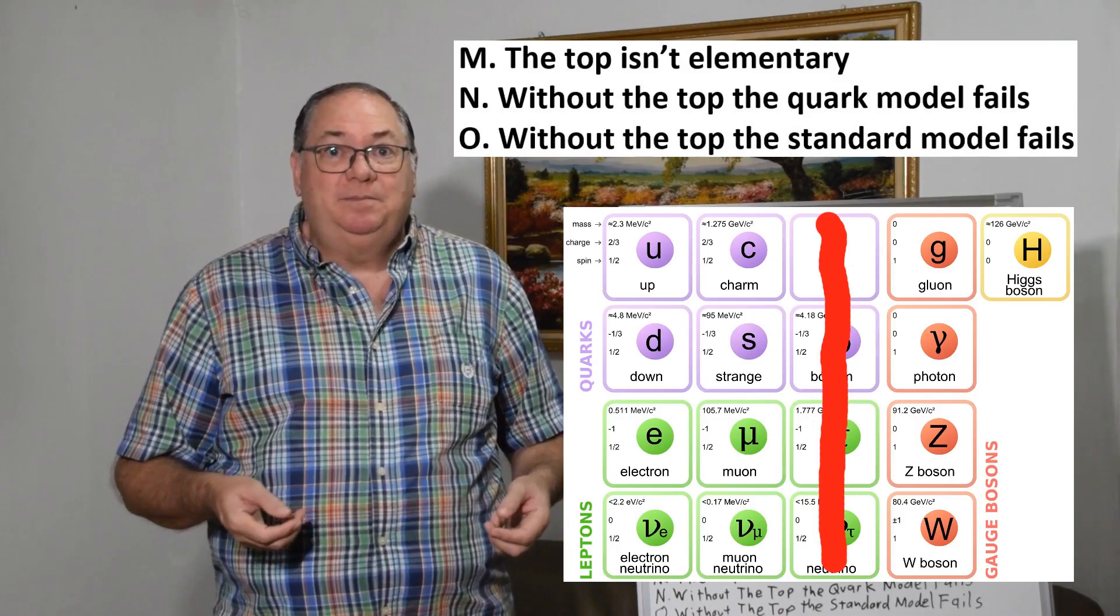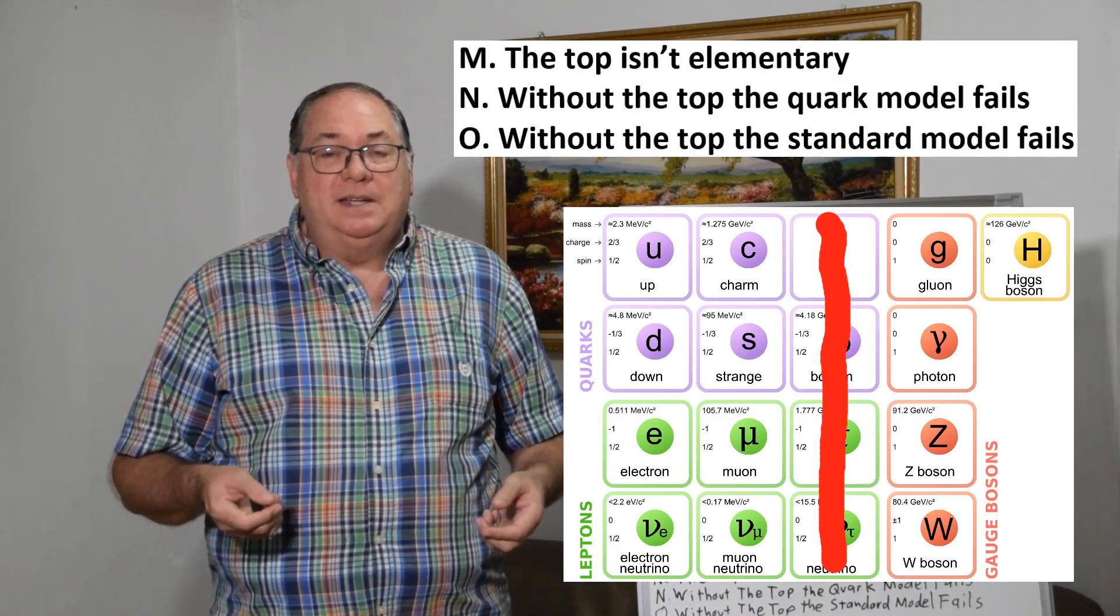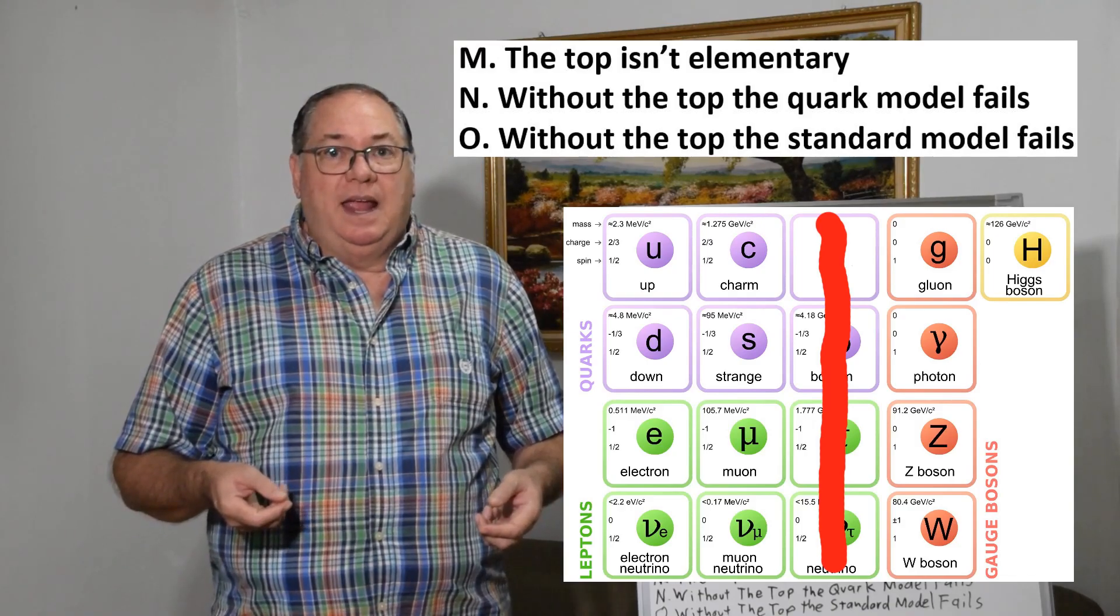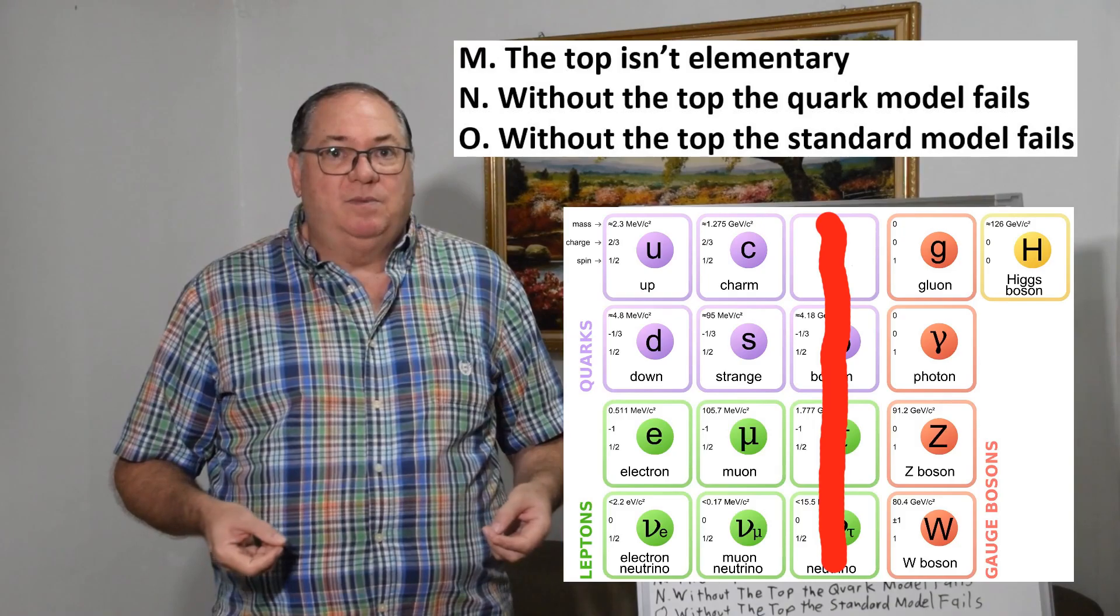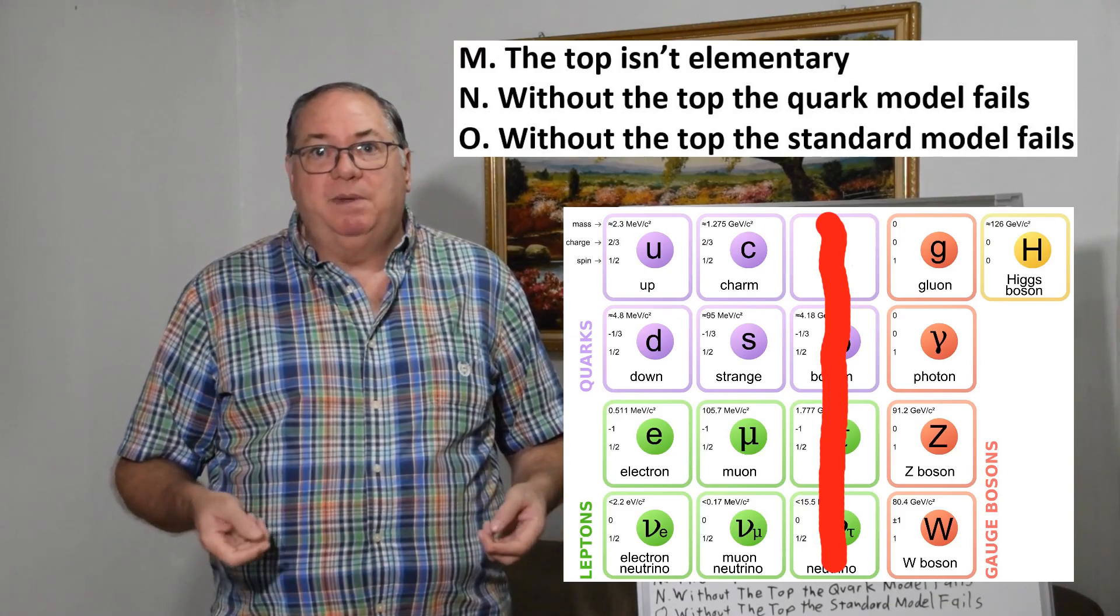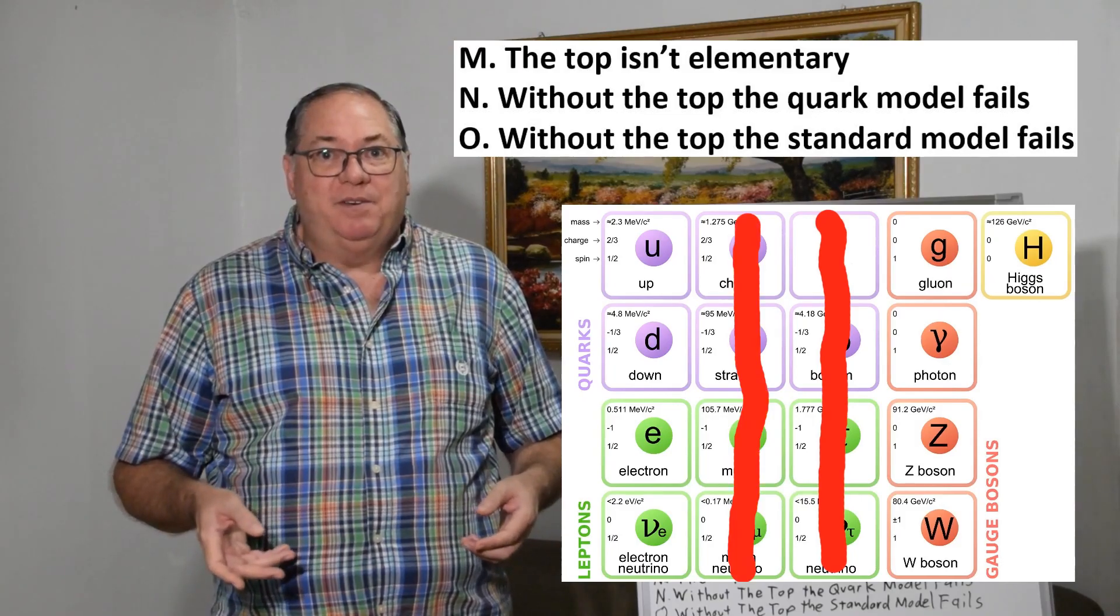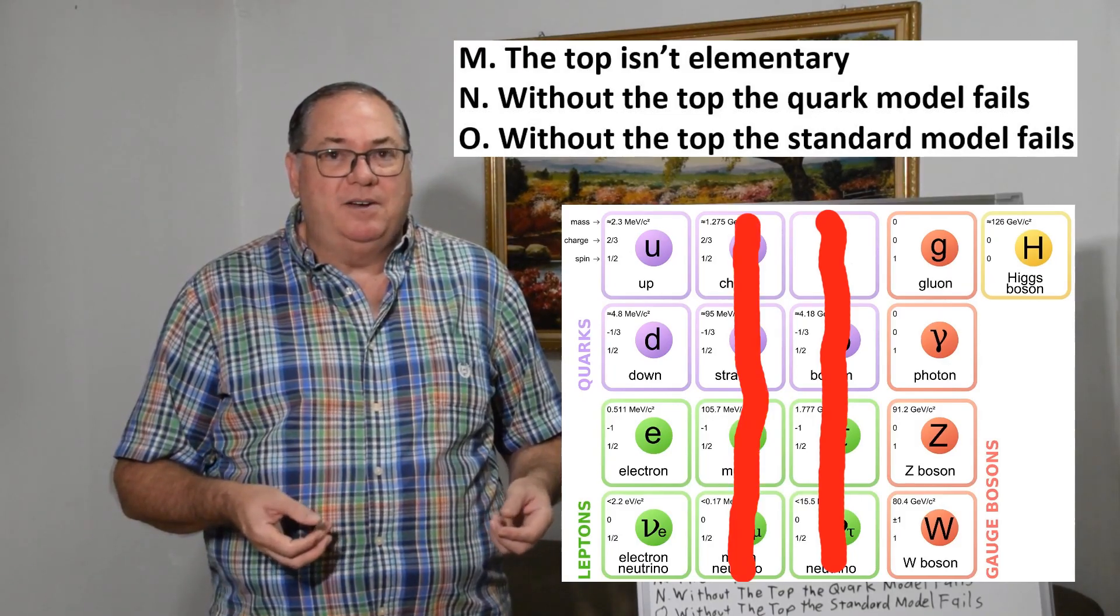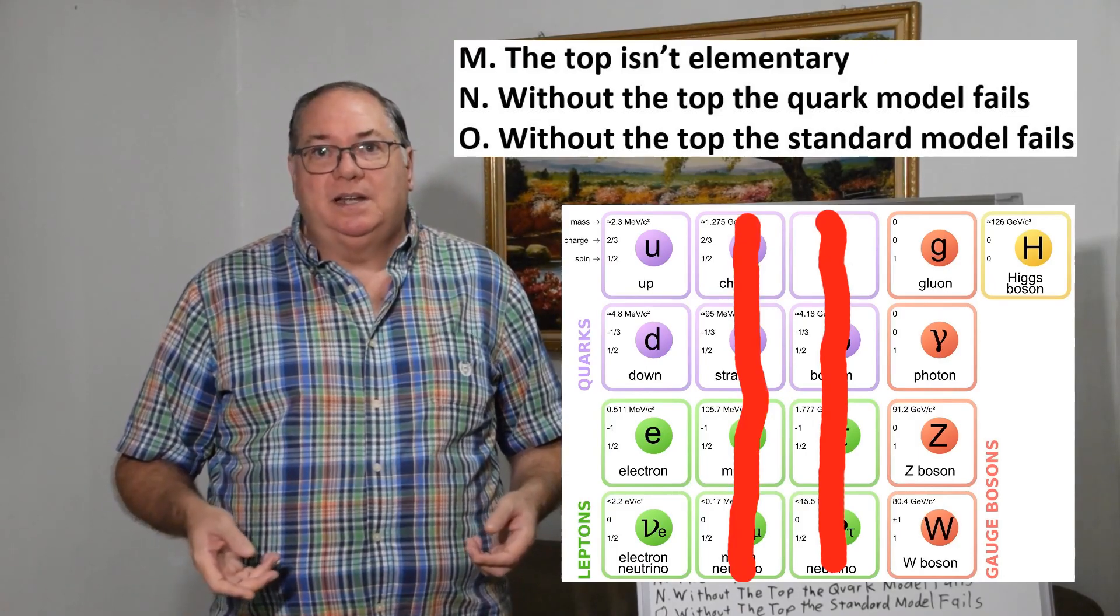The tau appears to decay to two K-ons and appears to be a D meson and not a lepton at all based on its decay products. And if the tau is a meson, then there's no reason for the neutrino to be an elementary particle.